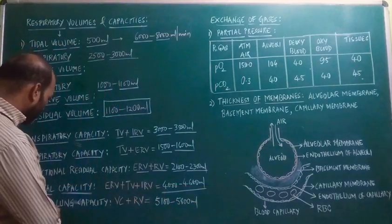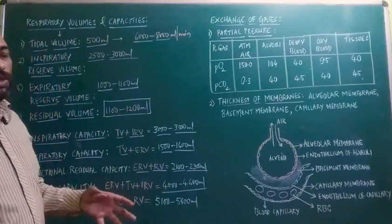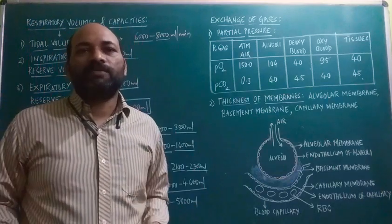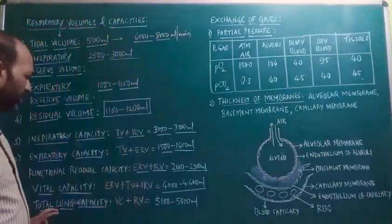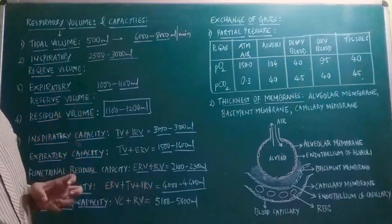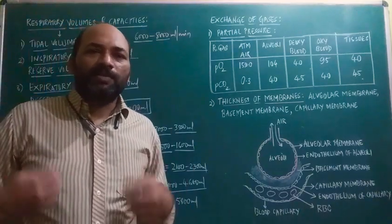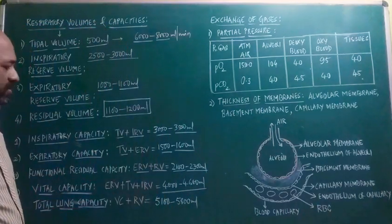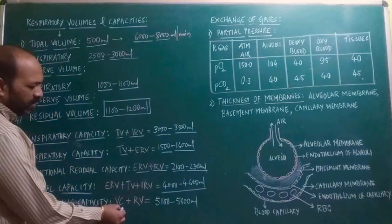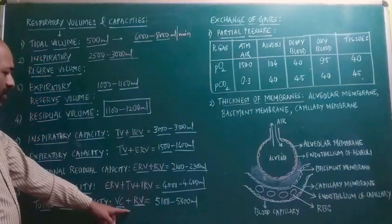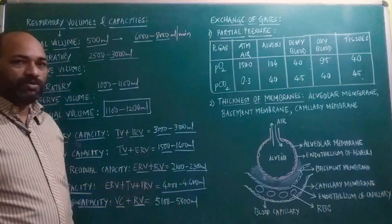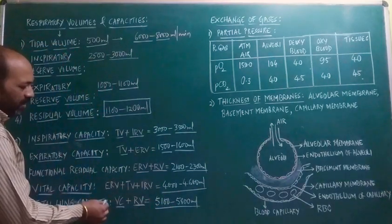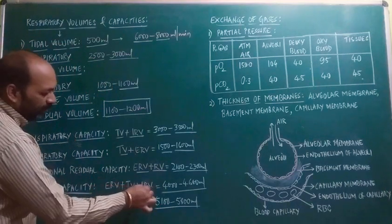The last capacity is total lung capacity — the total volume of air which can be accommodated in the lungs after forcible expiration. It is calculated as VC + RV, or equivalently ERV + TV + IRV + RV all together. Total lung capacity is 5,100 to 5,800 ml.